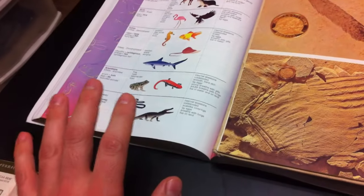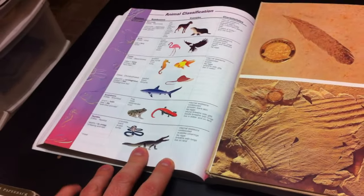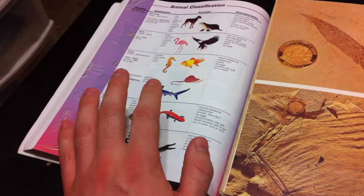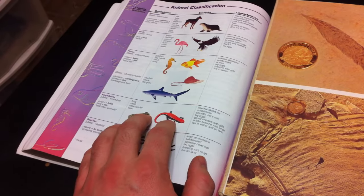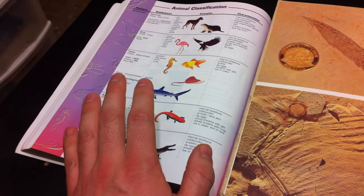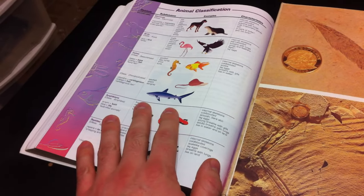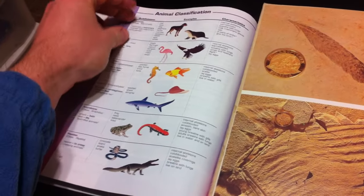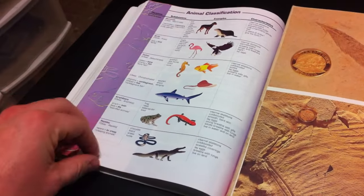So back in the 1700s Linnaeus recognized that he could classify organisms into groups within groups, with each group being defined by a set of shared diagnostic features. For example, he recognized a group called the vertebrates which all shared the feature of having an internal skeleton, and he could subdivide the vertebrates into five distinct classes.